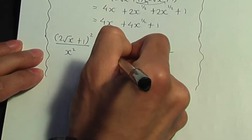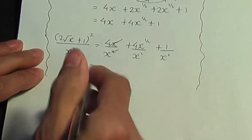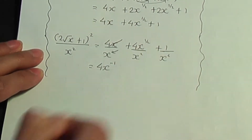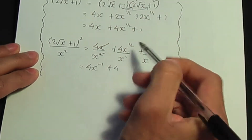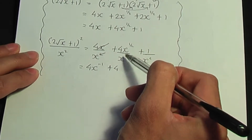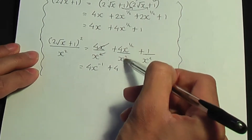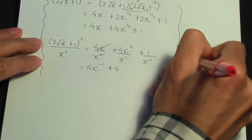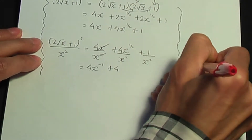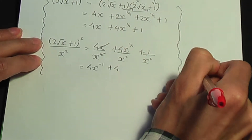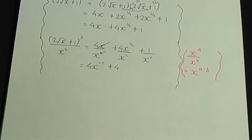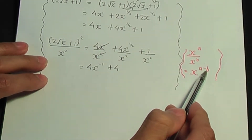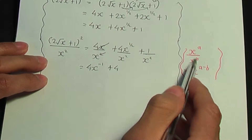I can cancel the x with one of the x's below to give 4 over x, which is the same as 4x to the minus 1. Now remember one of the rules of indices: when dividing two terms of the same base, we subtract the powers. So x to the a divided by x to the b is the same as x to the power a minus b.